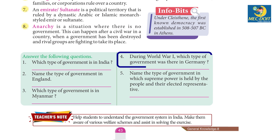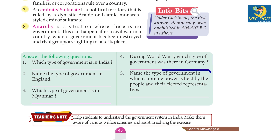4. During World War II, which type of government was there in Germany? Answer: Dictatorship. 5. Name the type of government in which supreme power is held by the people and their elected representatives. Answer: Republic government.